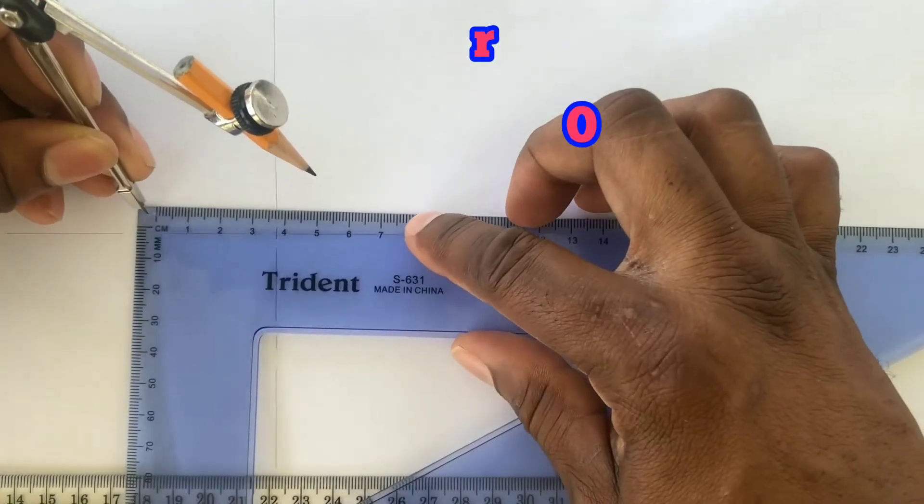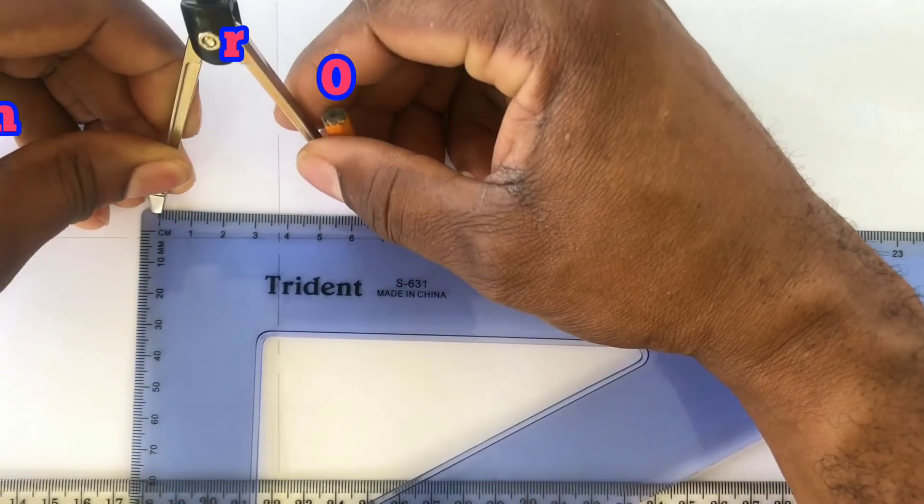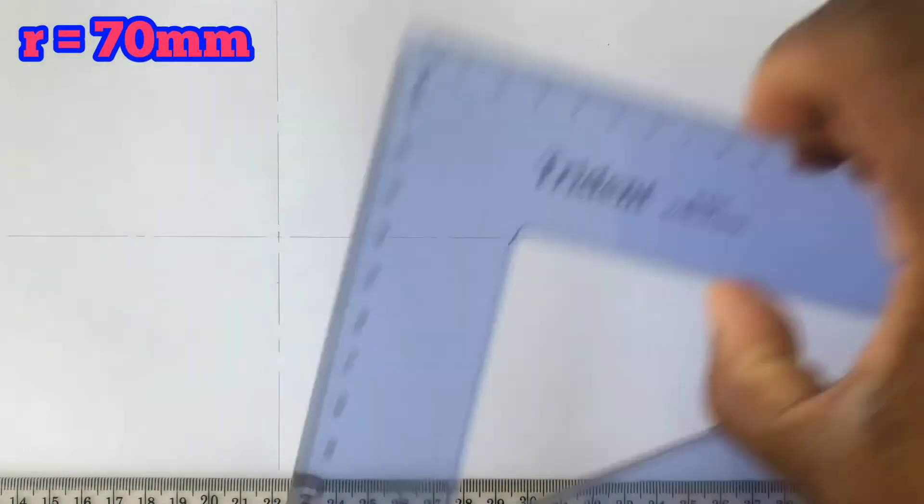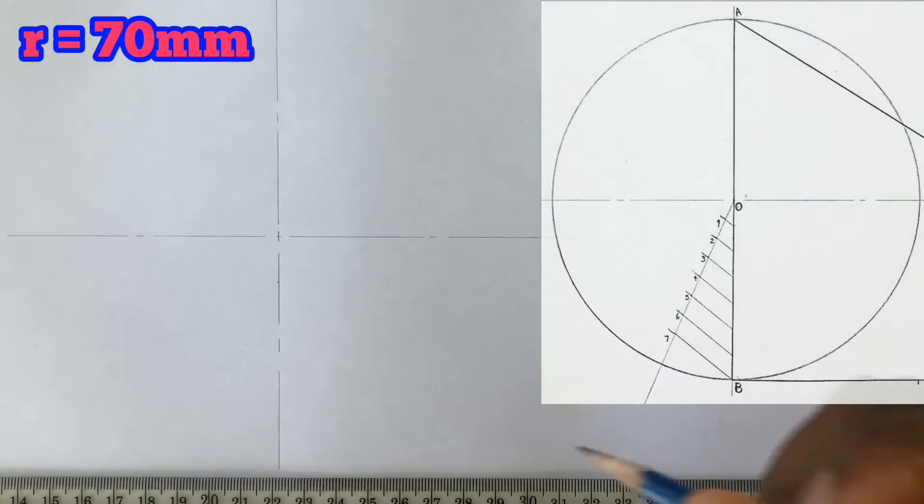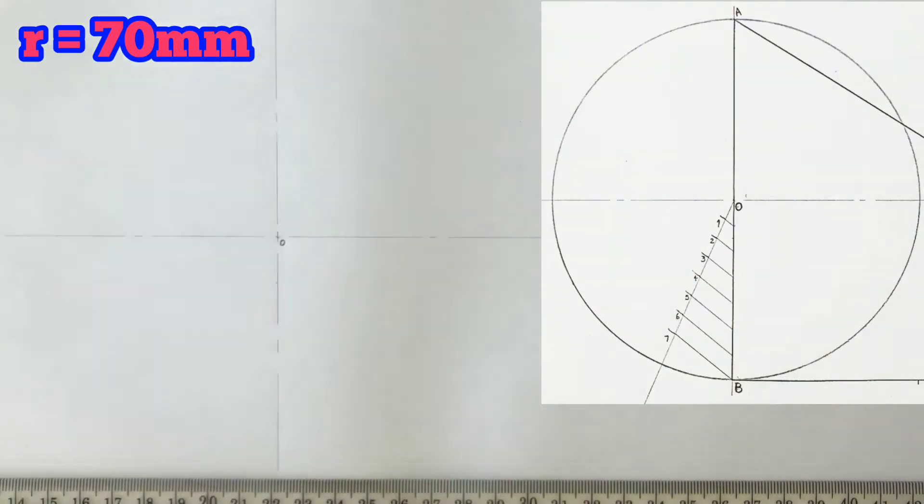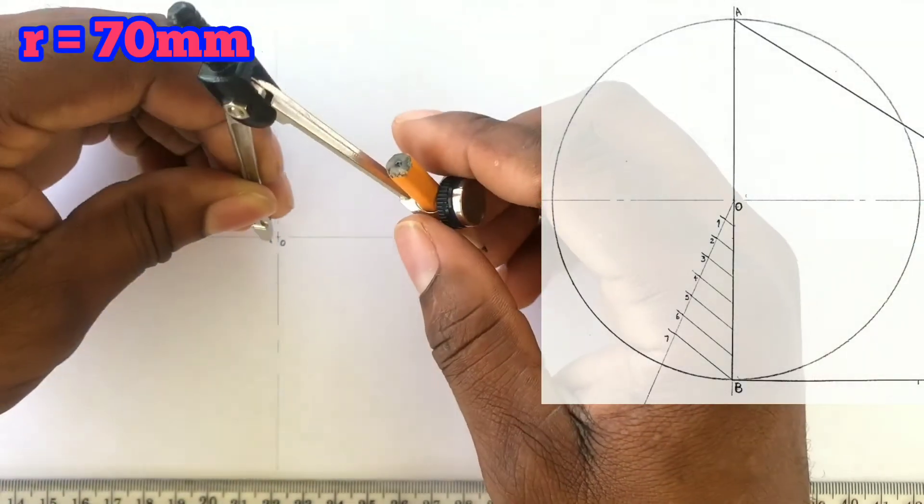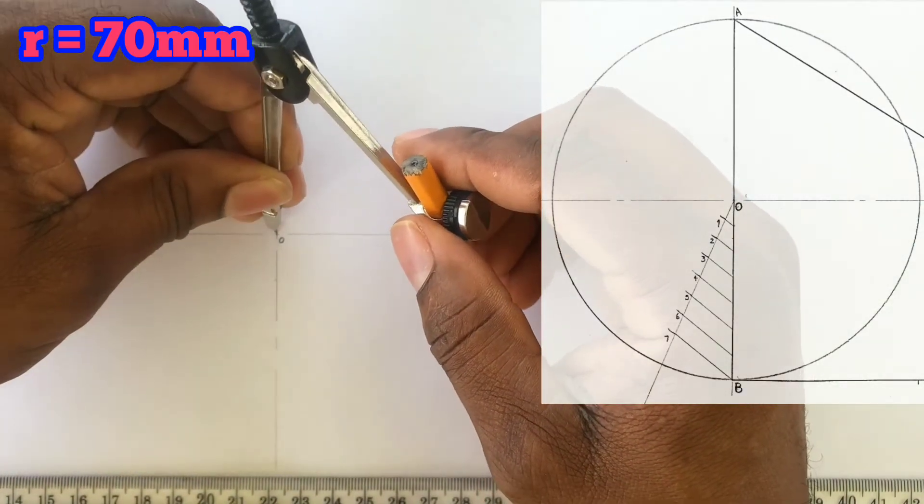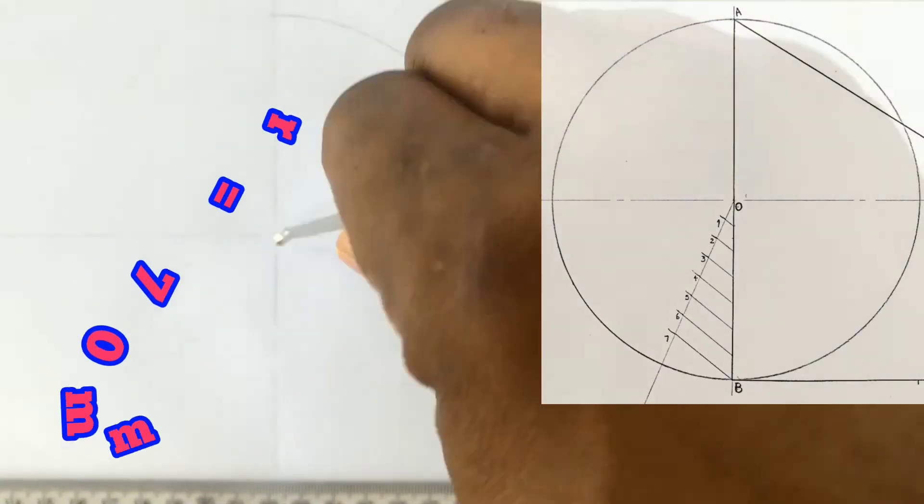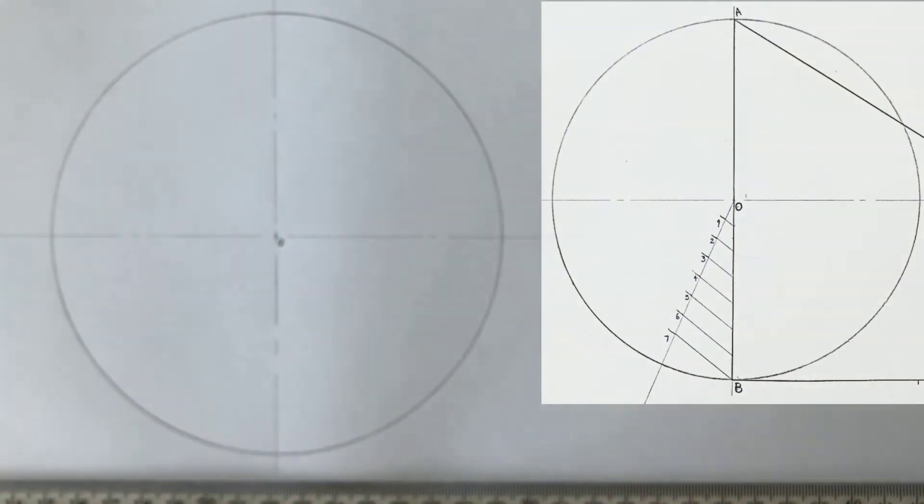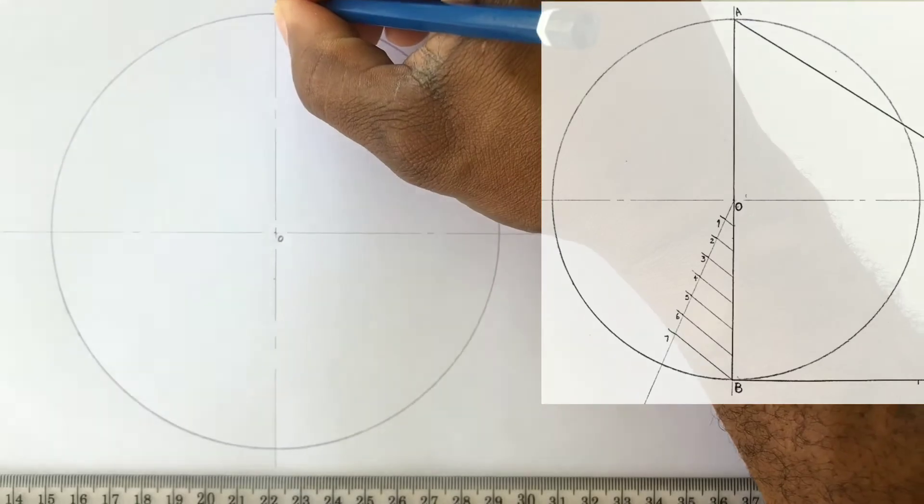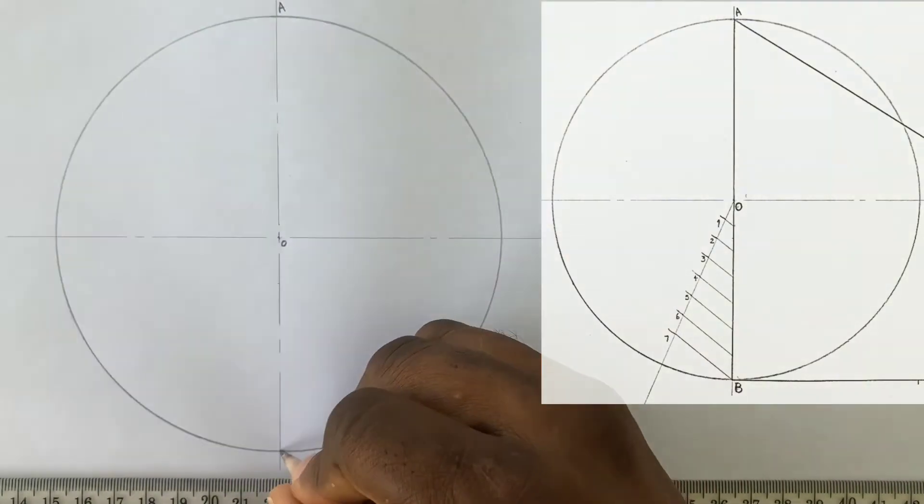Open your compass to a range the circle. Label the intersection of the center lines O. From O, scribe a circle with a radius of 70 millimeters. Label point A and point B.